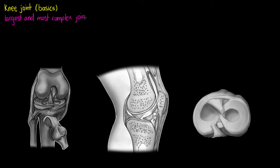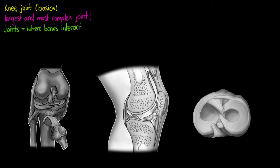Before we get into detail, let's just recap the most important thing we know about joints: they are points in the body where bones interact with each other. We can also call them articulations.